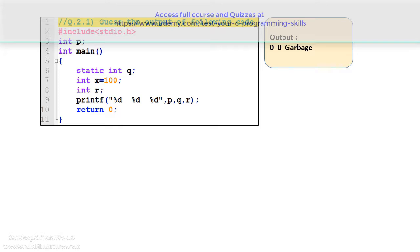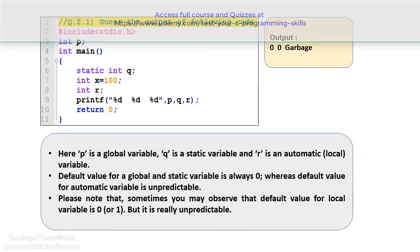Let's understand why this program gives such output. Here, p is a global variable, q is a static variable, and r is an automatic or local variable. The default value for global and static variables is always 0, whereas the default value for automatic variables is unpredictable — that is, garbage. Note that sometimes you may observe the default value for a local variable as 0 or 1, but it is really unpredictable. If you change the compiler or environment, you may get a different output. So for local variables the output is garbage, while for global and static variables the output is 0.